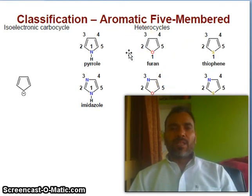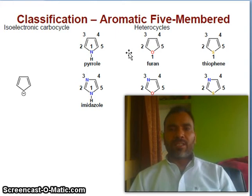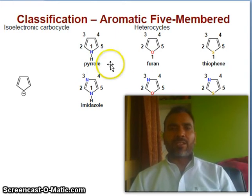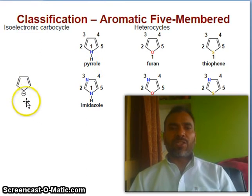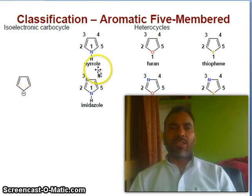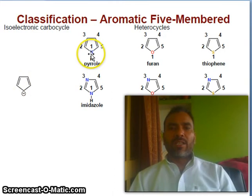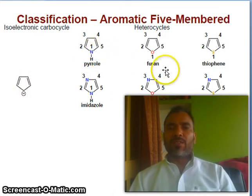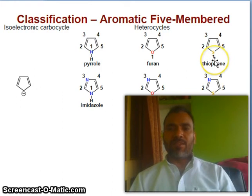Now let us consider five-membered aromatic heterocycles. This is isoelectronic with cyclopentadienyl — carbon, carbon — this is a negative charge. So this is pyrrole. Numbering starts with the nitrogen. Furan — numbering starts with the oxygen. Thiophene — numbering starts with the sulfur.